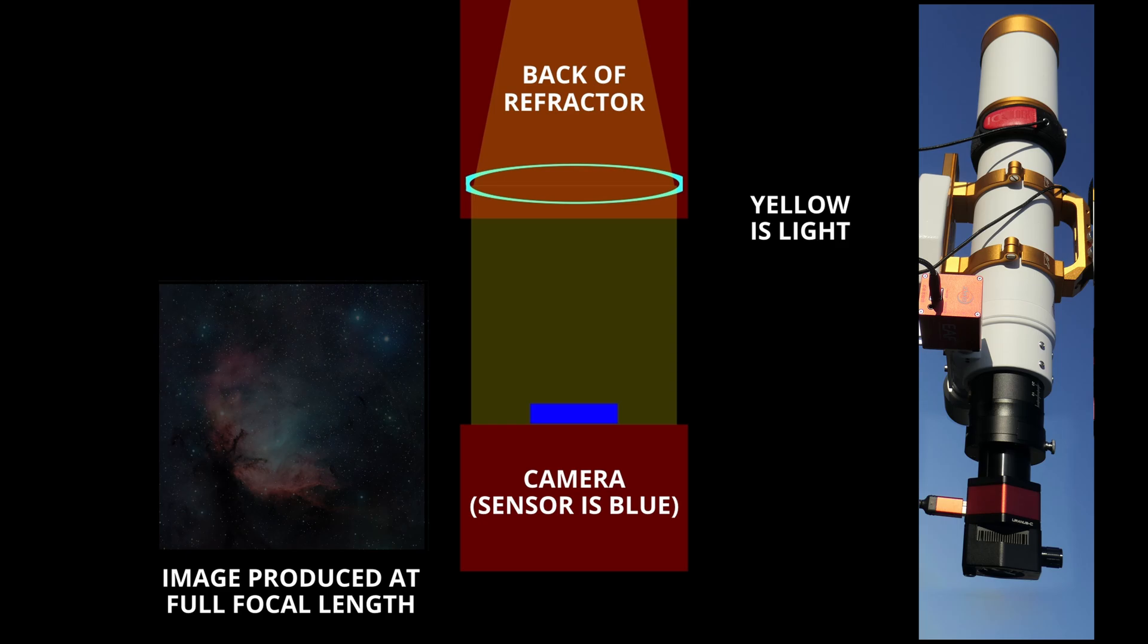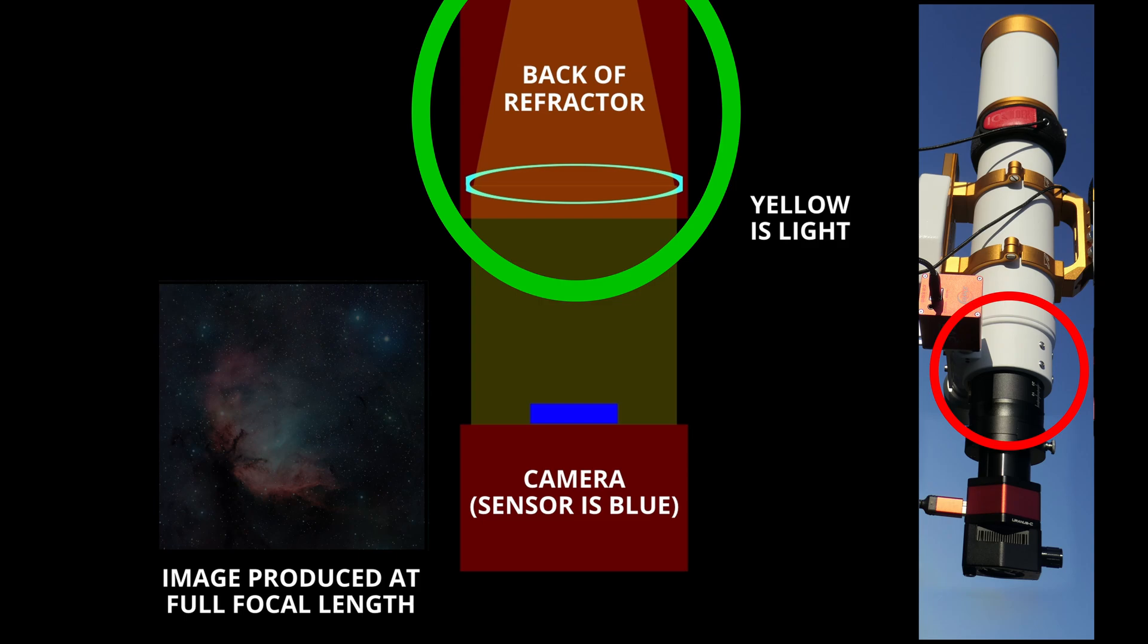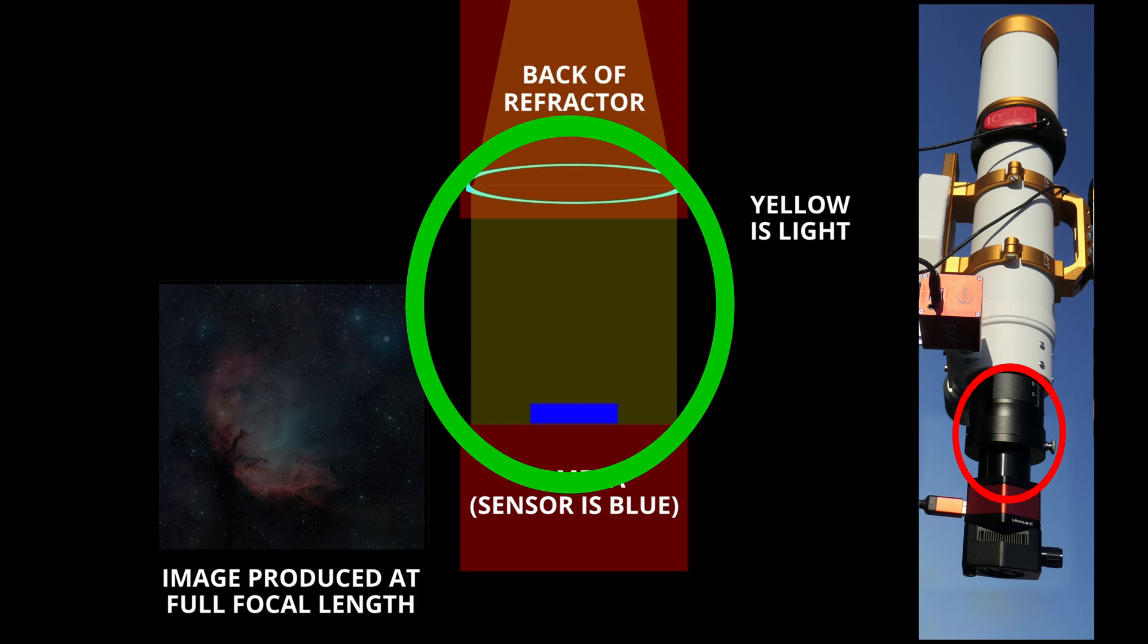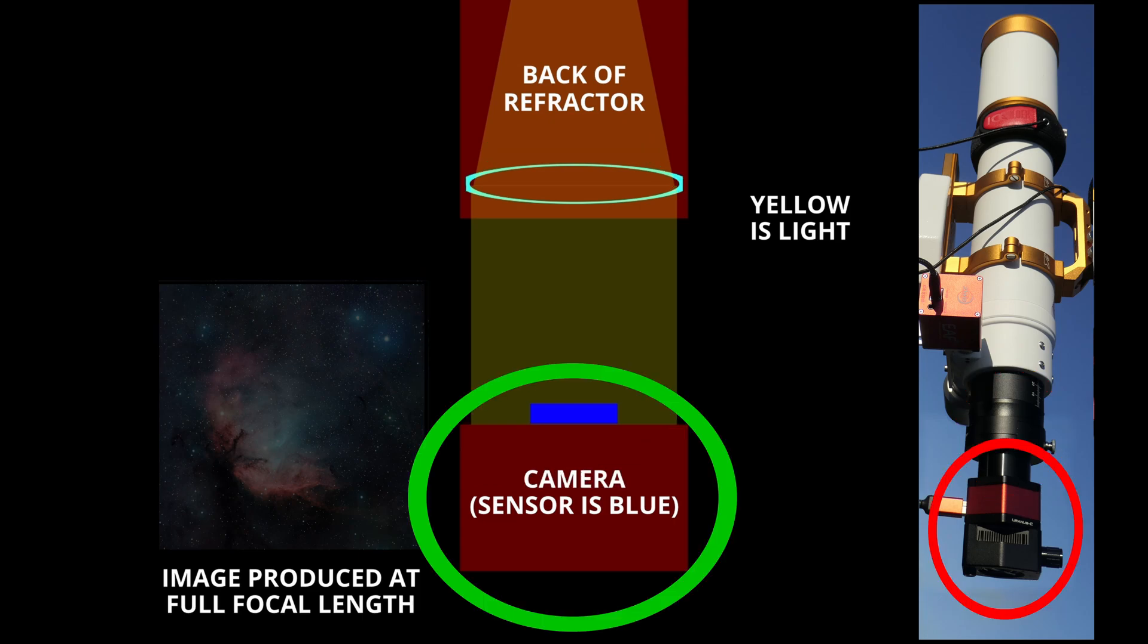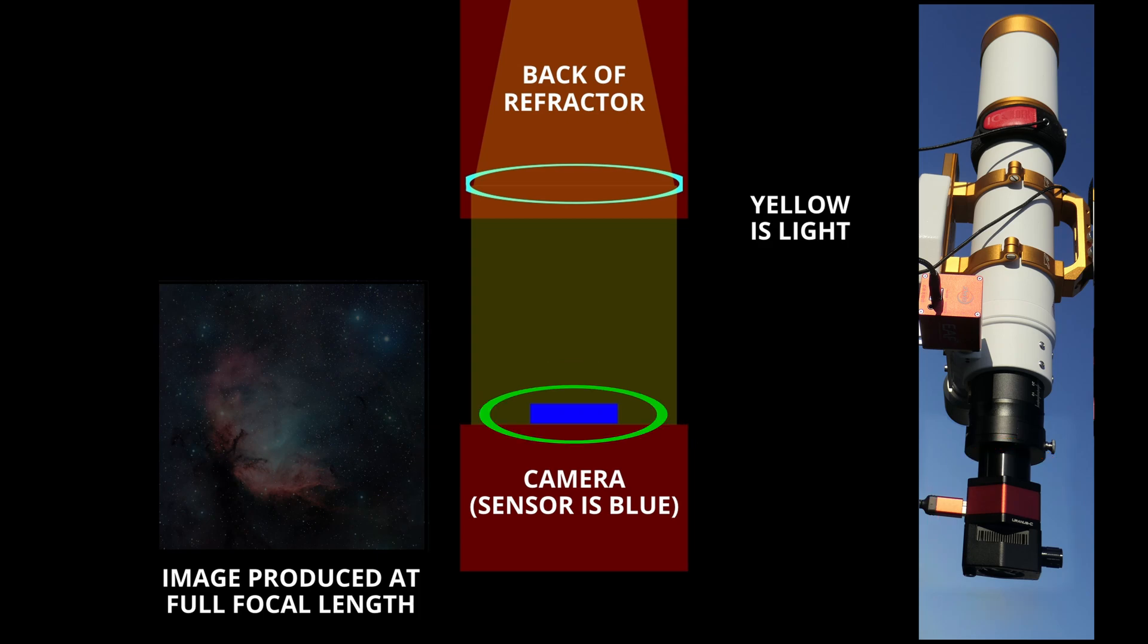This image portrays a refractor without the reducer. The upper portion represents the tail end of the refractor, where the secondary lens is. Light enters that lens and is brought into focus, and the image circle then radiates through the image train down to the camera, which is represented by the red block at the bottom of the image. The blue rectangle represents the camera's sensor. As you can see, much of the light in the image circle does not touch the sensor and therefore is not recorded. This happens because the light is spread out, and that's what causes magnification.